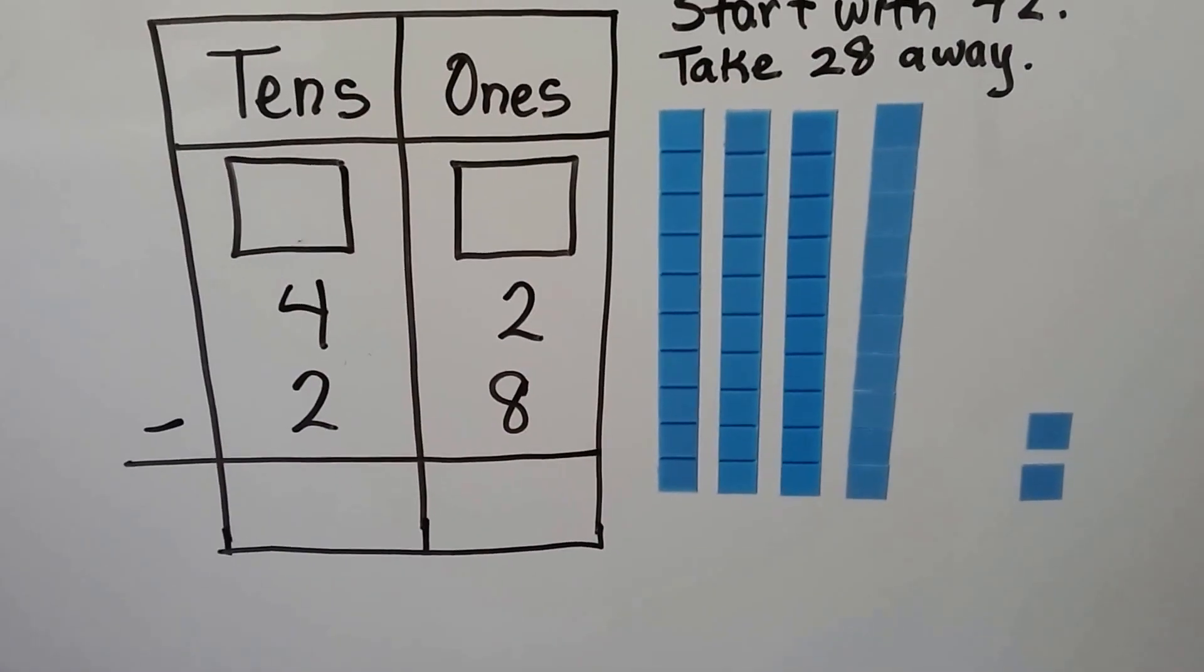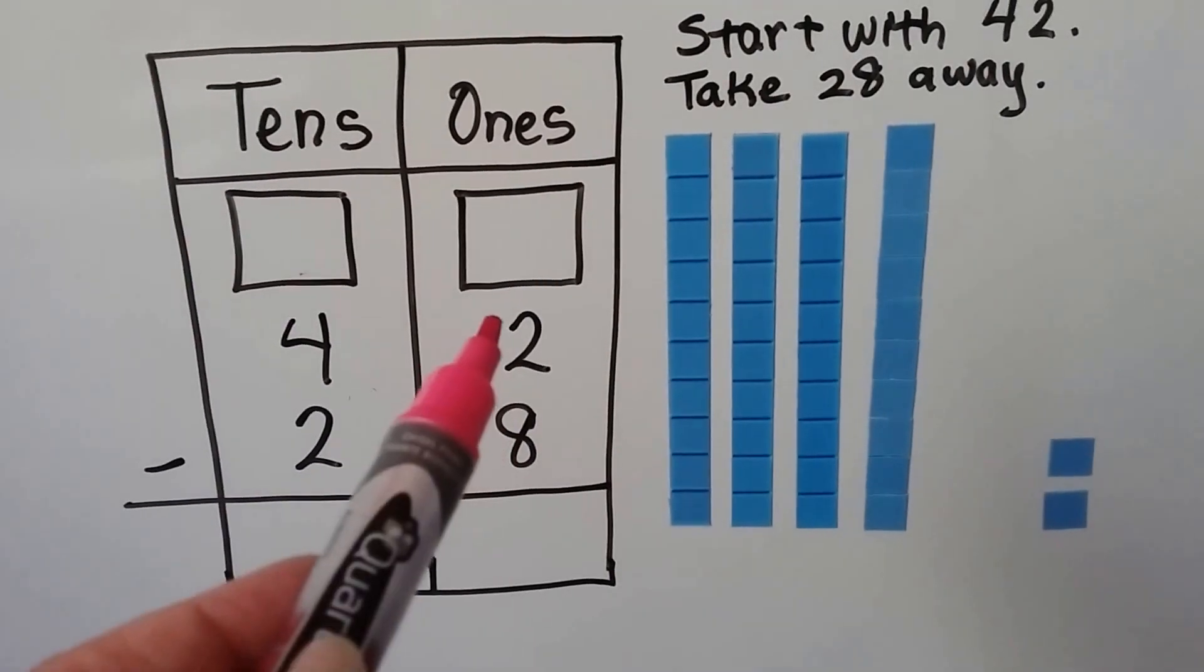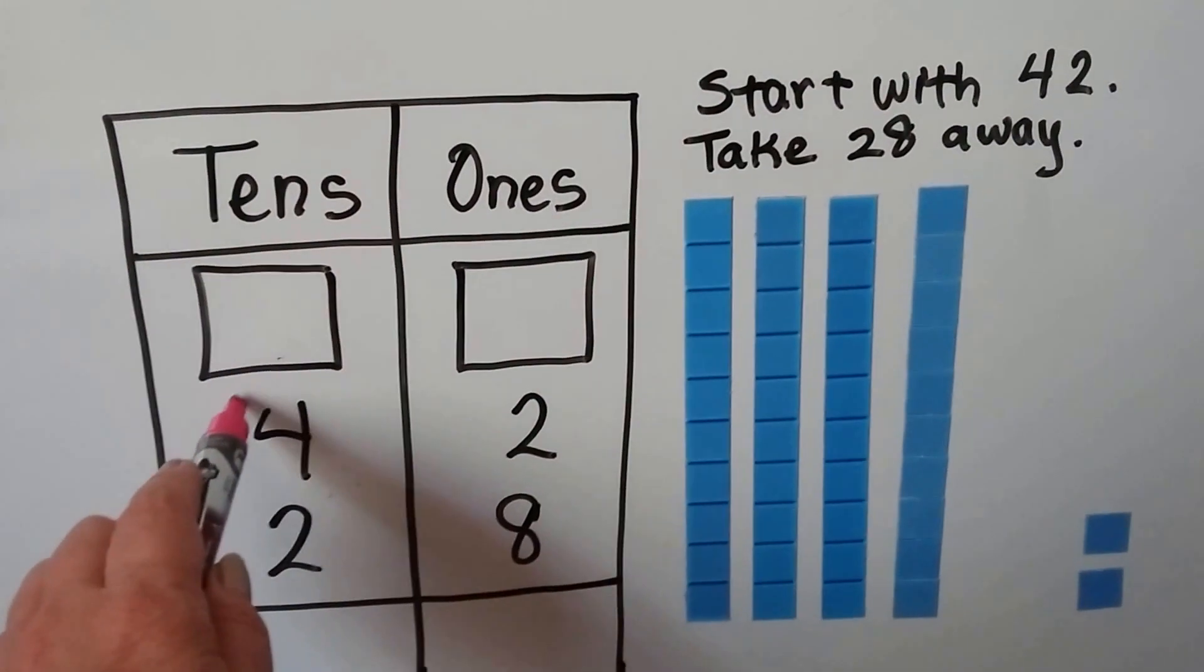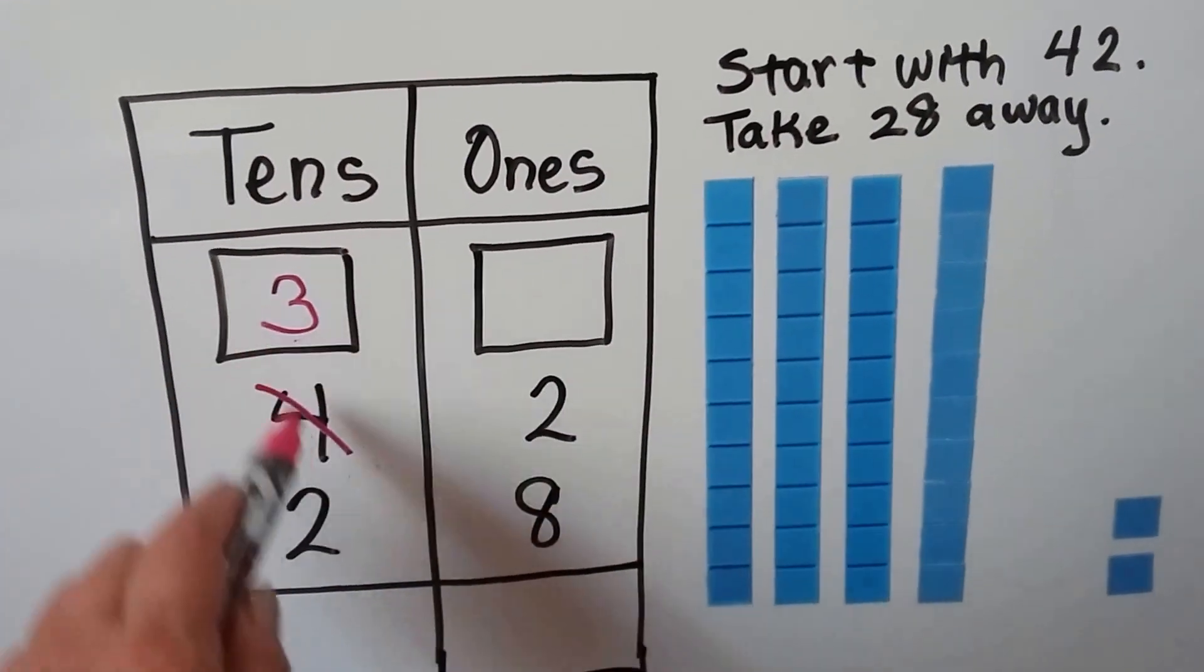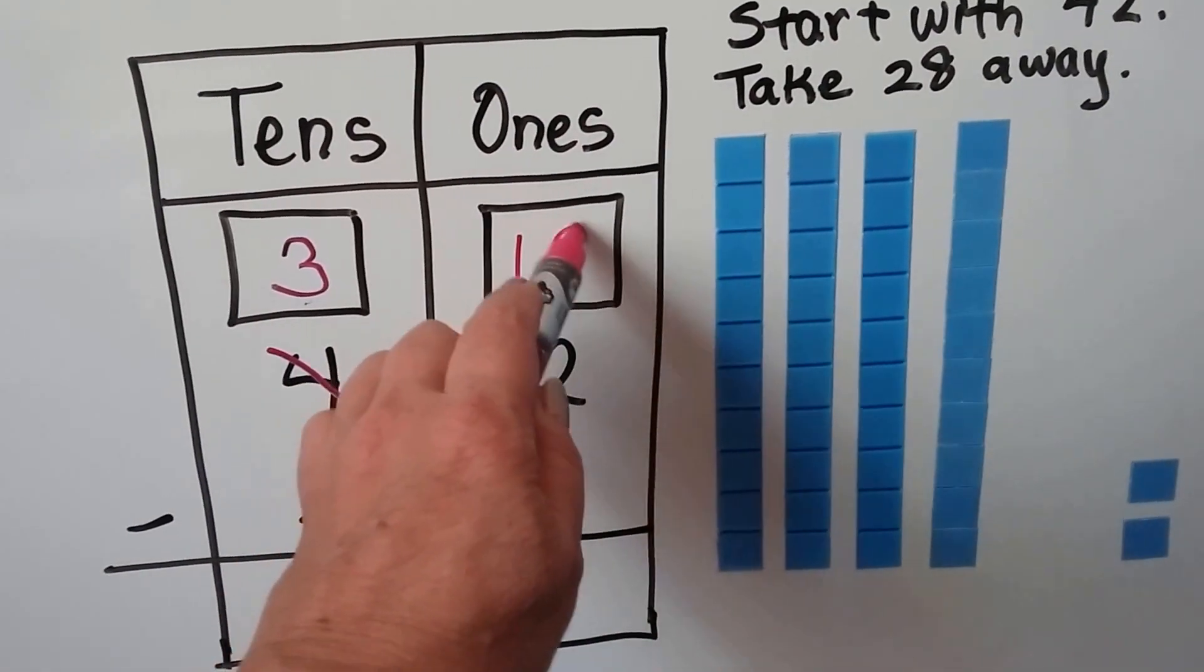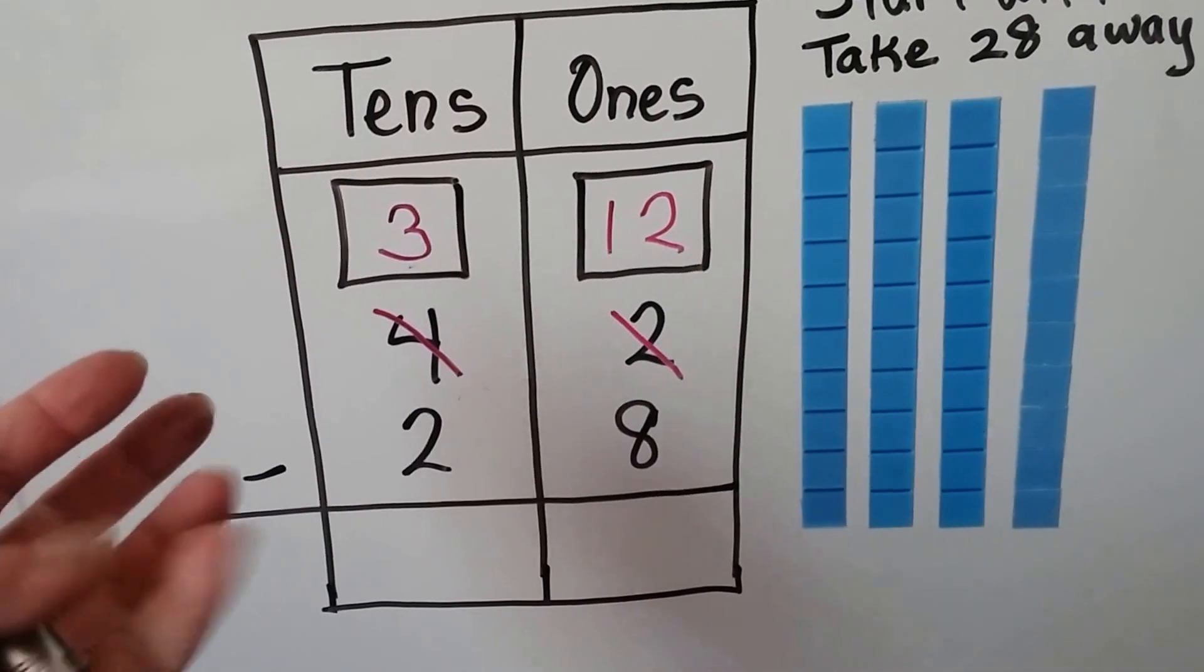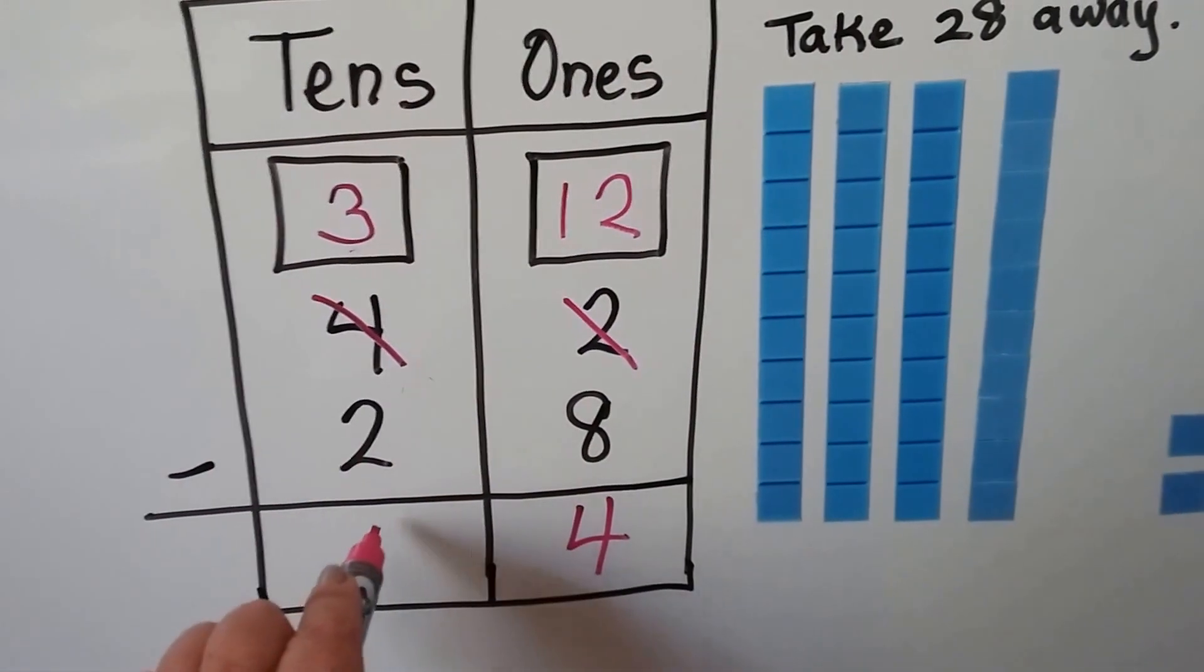Let's try it again. We've got 42 minus 28. We look at the ones in the subtrahend and the ones in the minuend. This is greater than the ones in the minuend. So yeah, we're going to have to regroup. So we're going to take 1 away from the tens place, and the 4 is going to become a 3. We give it to the ones place. So now instead of 2 ones, we have 12 ones. 12 minus 8 is 4. 3 minus 2 is 1.